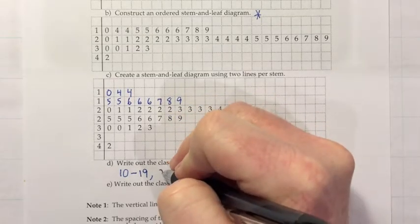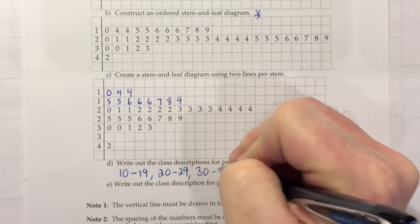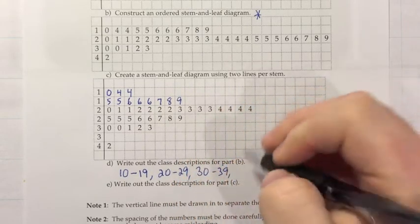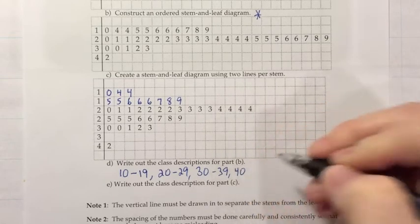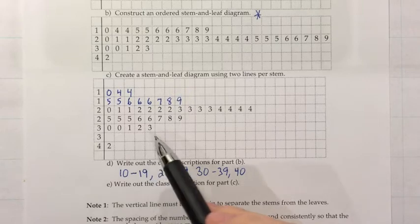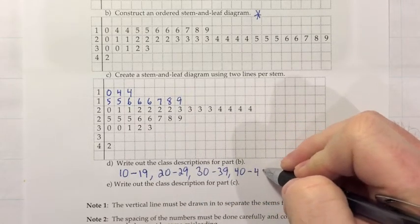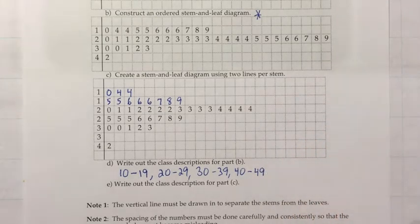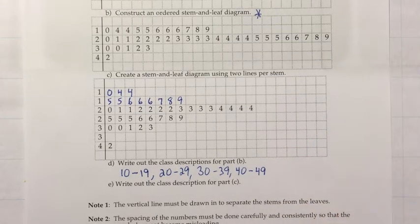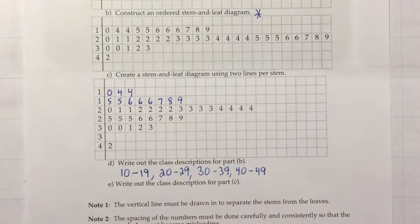And then just continuing on, we have 20 through 29, 30 through 39. And then sometimes in class people will say 40 through 42 or something like that, or maybe even 30 through 33 just because of what's in the class. But class descriptions are supposed to list what could be on the class, not what actually is in the class. And if we had something as large as 49, it still would have gone on this line. So we're supposed to reflect that when we write the class descriptions.